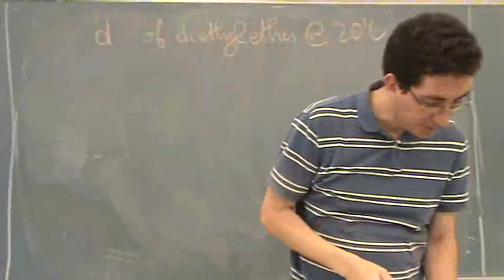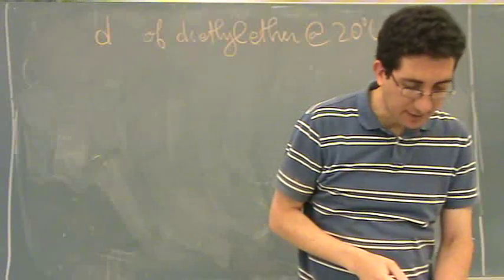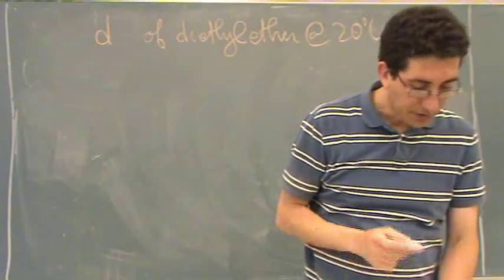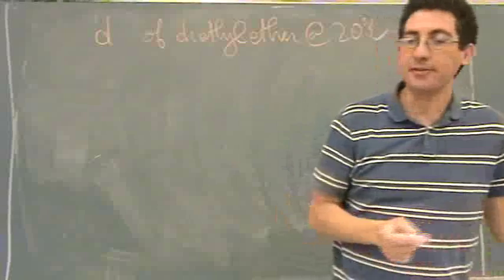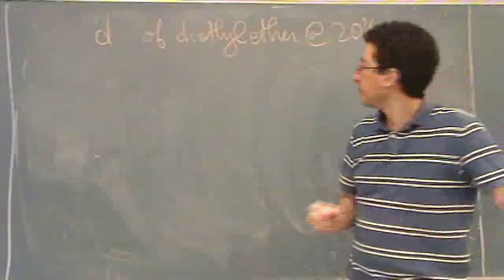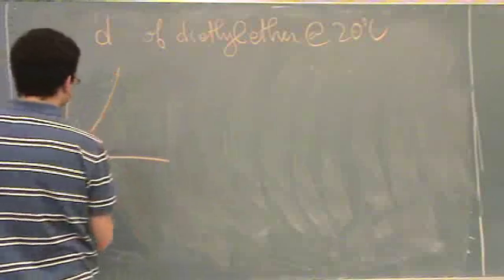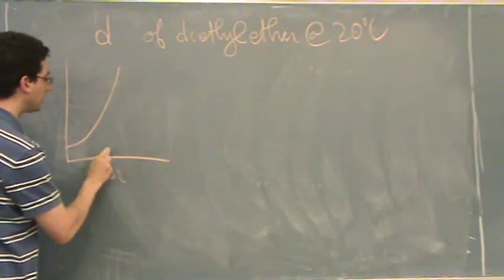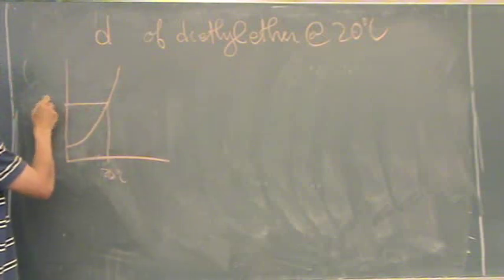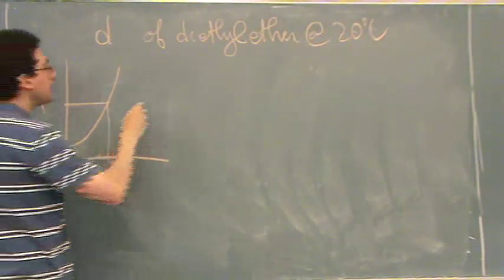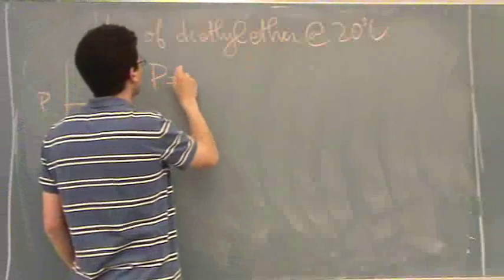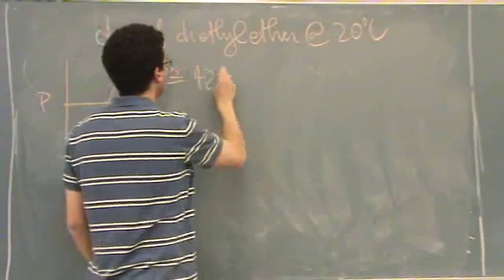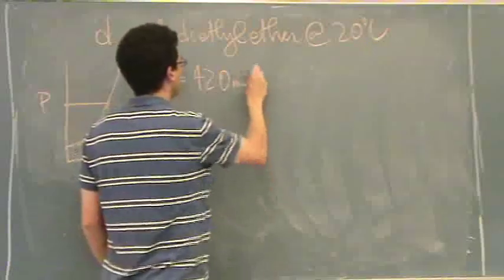What you have to do is use the graph or the figure on page, top of page 477. So if you have a figure, you just look at, it looks something like this. And they say it's at 20 degrees in this question. So you just go up and go over and read off whatever the pressure is. That pressure is approximately 420 millimeters of mercury.